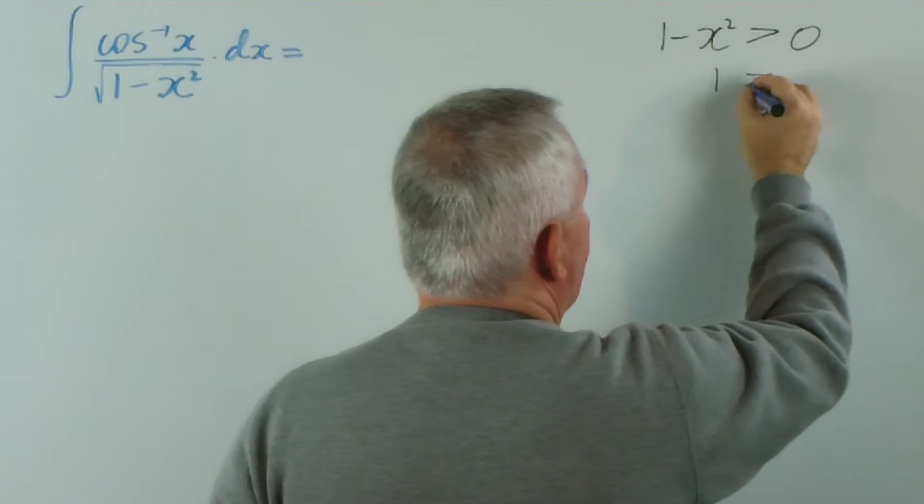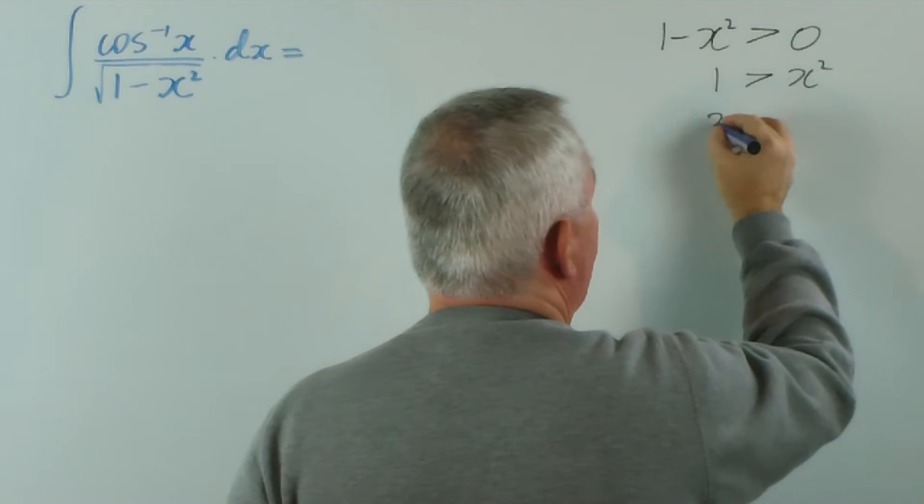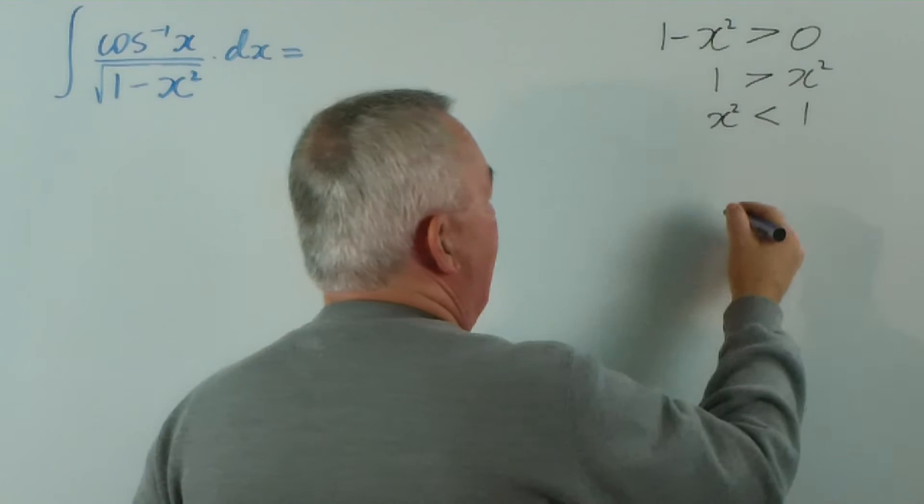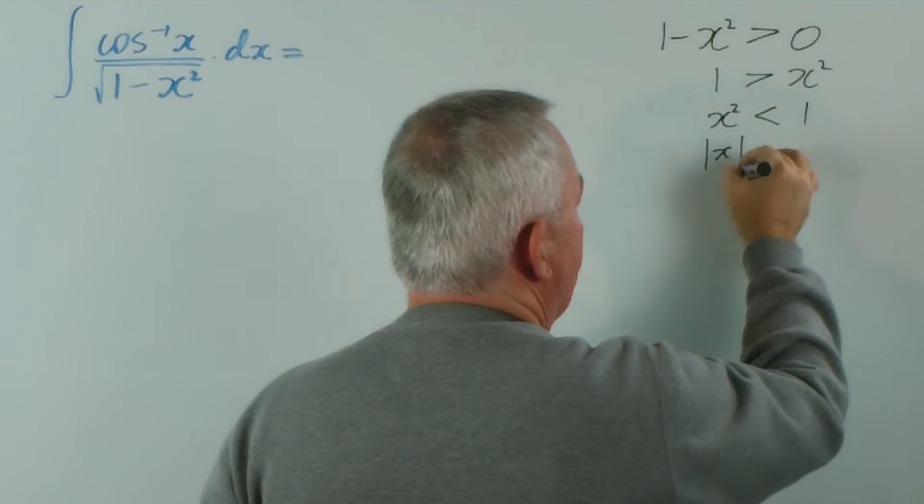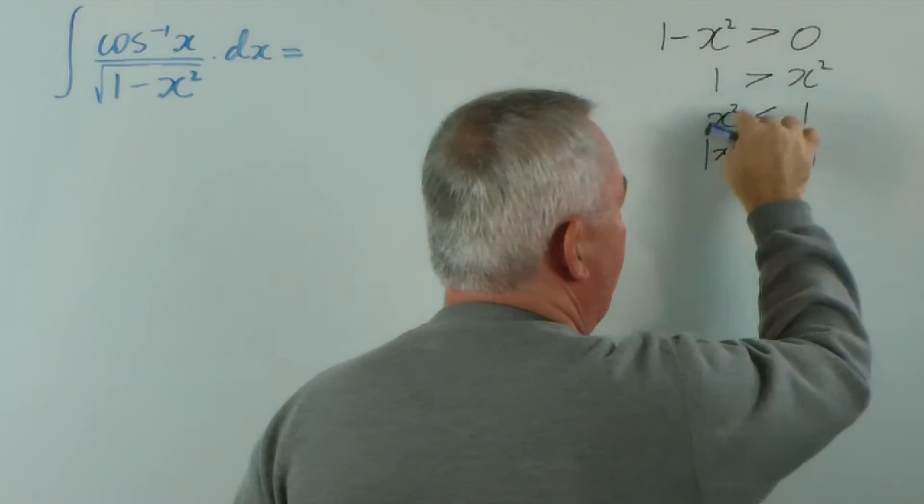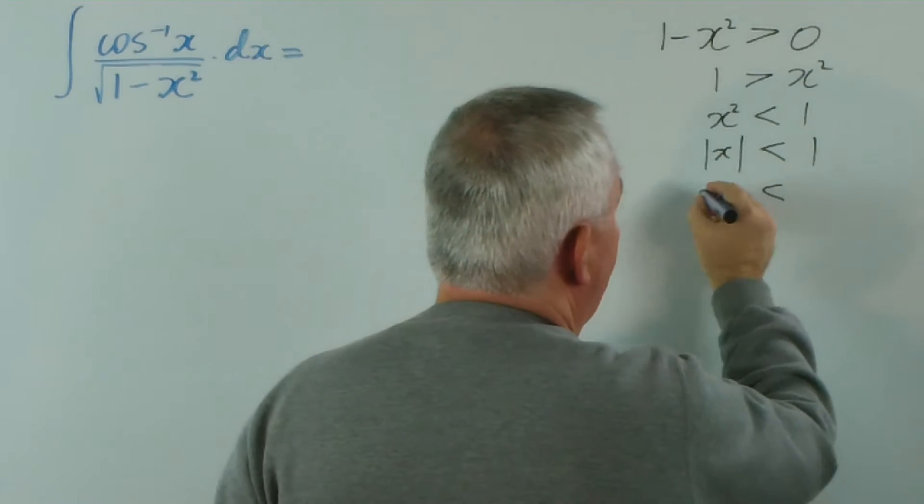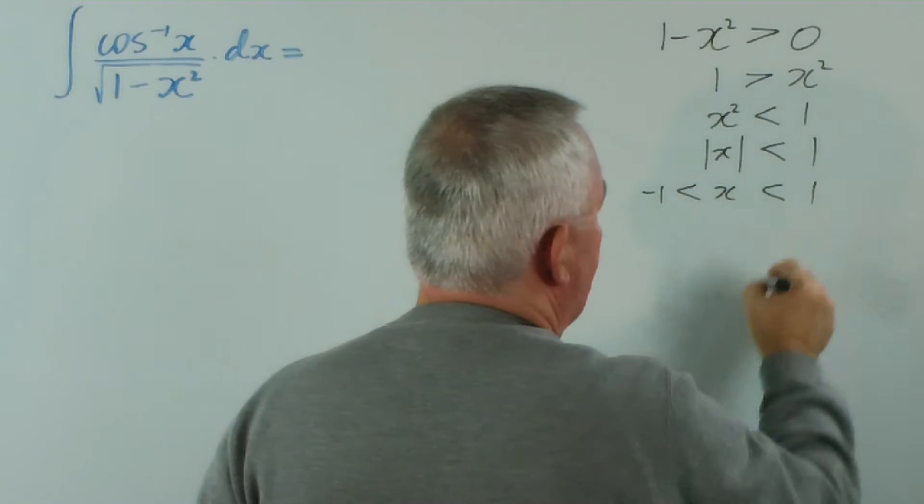And if I add x squared to both sides and reverse the inequality, and take square roots—remember that the square root of x squared is the absolute value of x—then x must lie between minus 1 and 1.